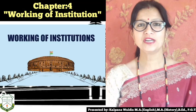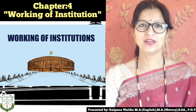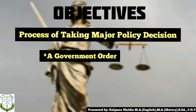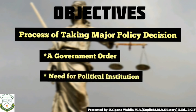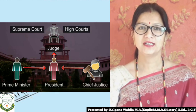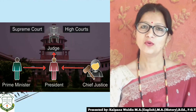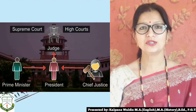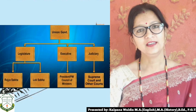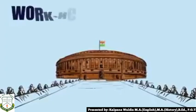Welcome back. Let's begin the new chapter in Political Science, i.e., Working of Institutions. Here in this module we are going to understand the following topics. The objectives of this module are the process of taking major policy decisions, where we will understand the government order and the need of political institutions. In democracy, rulers have to work with institutions. These institutions meet together and take important decisions for the growth of the country. These institutions are the pillars of government: the executive, legislative, and judiciary.